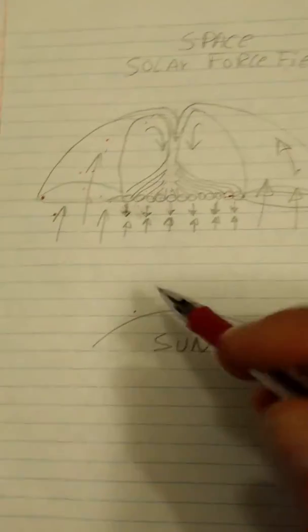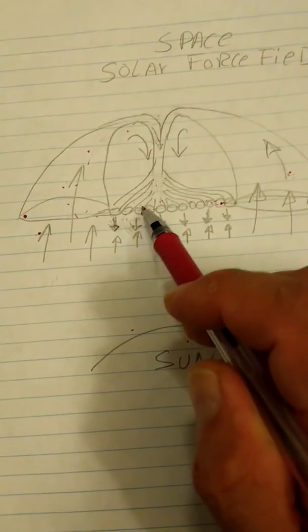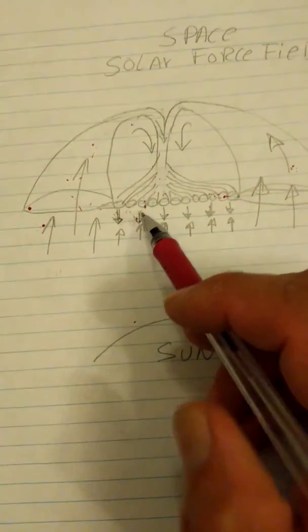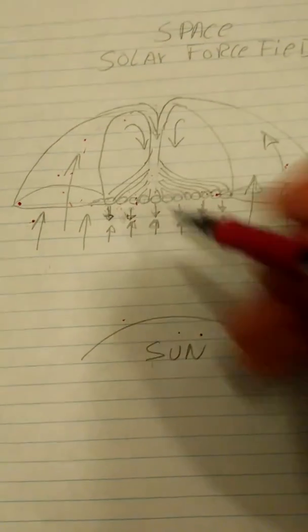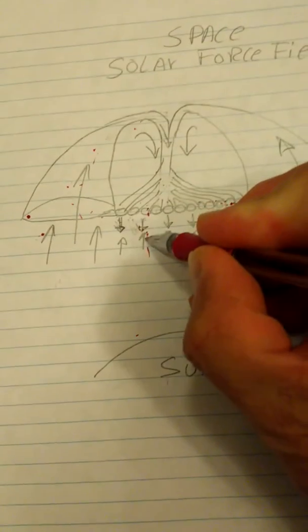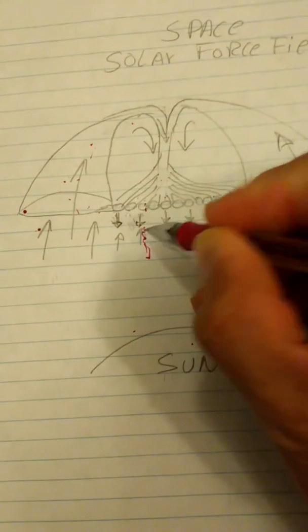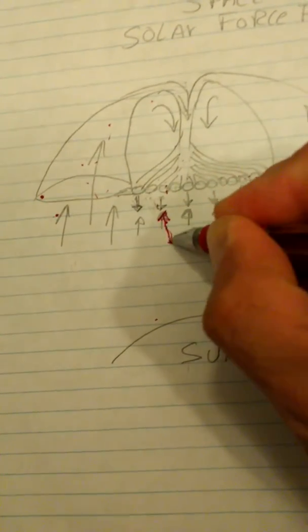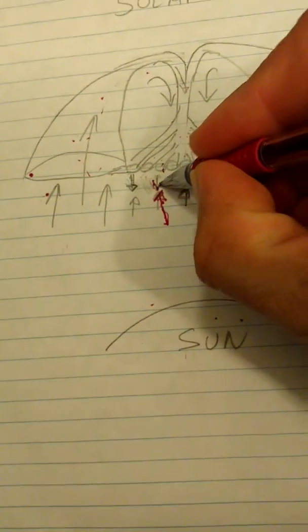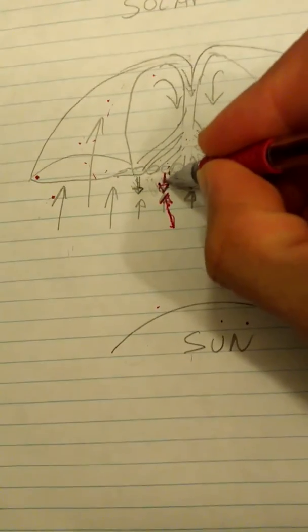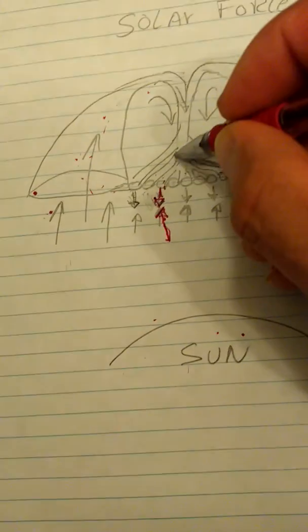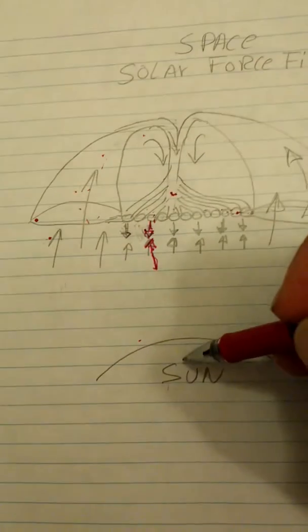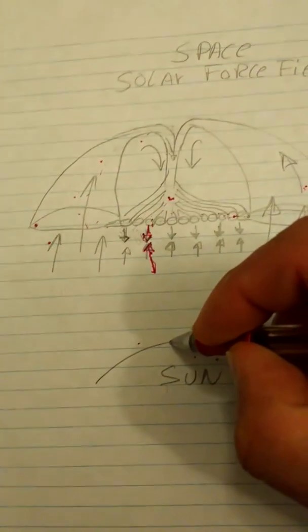So the sunlight coming out this way acts as a force field. The sun rays are here, and they are blocked by another sunlight coming out from the fiber optics. So basically, the sunlight is used against itself.